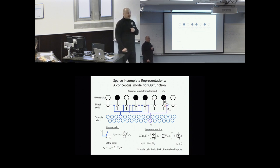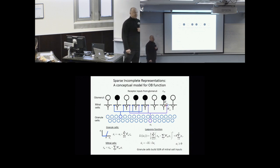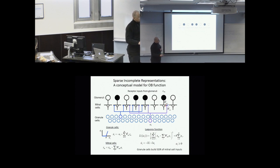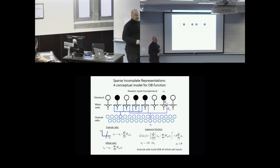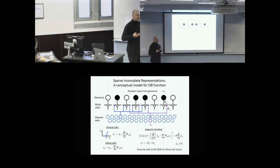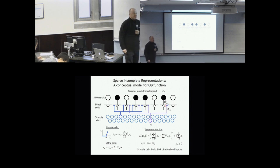Regarding cortical modulation: you can modulate the representation by changing the cost term, which is basically the threshold for granule cell activation. What cortical input can do is make some cells more relevant than others on an online basis.